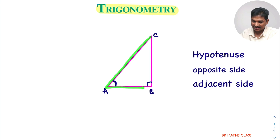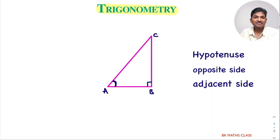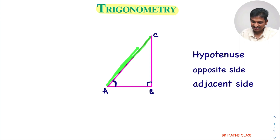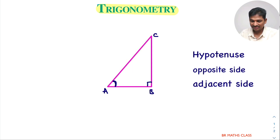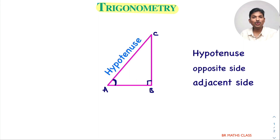I consider a right angle triangle ABC which has a right angle at B — that means 90 degrees is at B. Now, which side is known as hypotenuse? This is the easiest thing to identify in a right angle triangle. The side which is opposite to 90 degrees is called the hypotenuse. You see this side is opposite to 90 degrees, so AC is the hypotenuse.